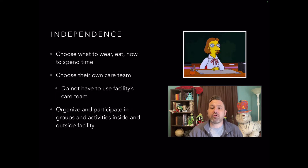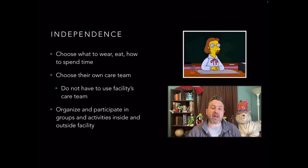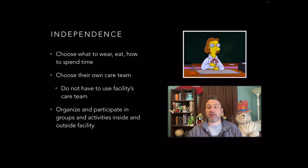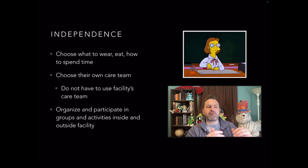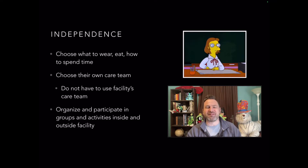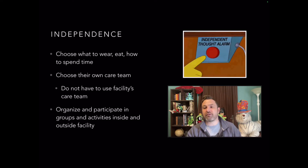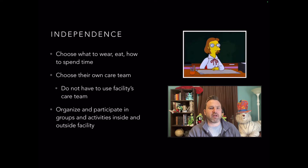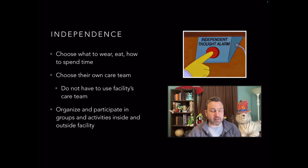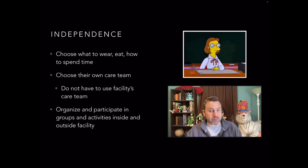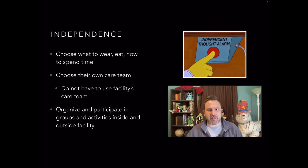Continuing independence: they have the right to choose what to wear, eat, and how to spend their time. They have the right to choose their own care team — they don't have to use the facility's care team. If they want to use their family doctor, that's their right. However, the facility doesn't have to transport them to their doctor of choice — how they get there is their problem. The family has to organize that. They also have the right to organize and participate in groups and activities inside and outside the facility.